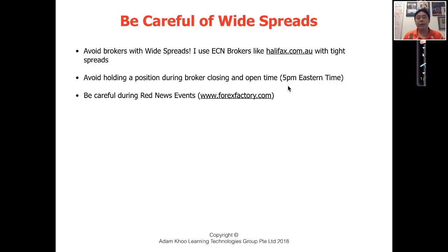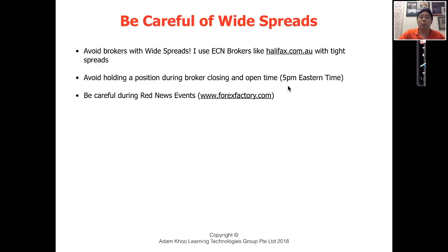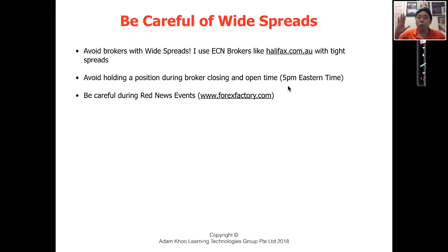Every day before you trade, go to forexfactory.com and check for major news events highlighted in red. When these news events are released — like interest rates or inflation data — spreads can widen dramatically from 1 pip to 30 or 40 pips. If I'm in a normal trade, I always exit before the news is released to avoid being stopped out by widened spreads even though the chart price hasn't reached my level. I do have a news scalping strategy in my Advanced Forex training course, but for normal strategies like the bull flag surfing or trend continuation strategies, always exit before major news.